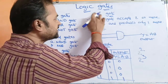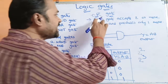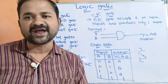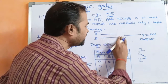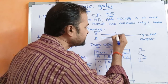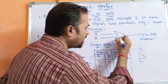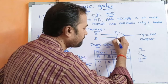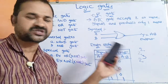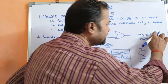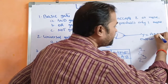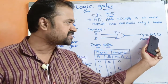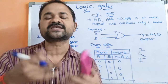Now let us see the second one, that is OR gate. OR gate accepts two or more inputs and it produces only one output. Now let us see the symbol for the OR gate. OR gate accepts two inputs, A and B, and it produces one output Y. OR means it simply performs sum operation on the inputs, so the output is Y is equal to A plus B.